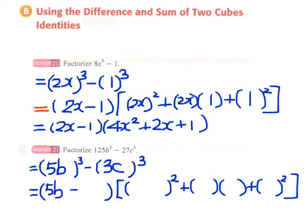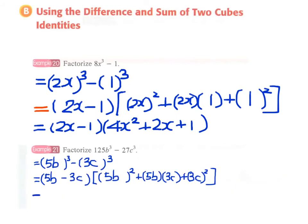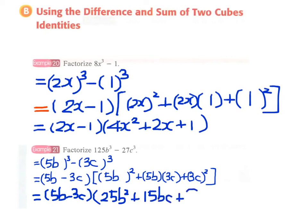Therefore we have 5b minus 3c, and this will be (5b)(5b)(3c)(3c). Finally we simplify our answer: 25b squared plus 15bc plus 9c squared.